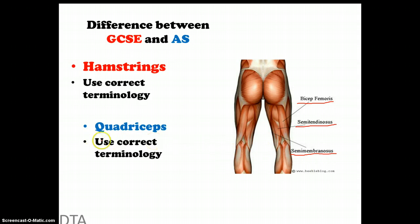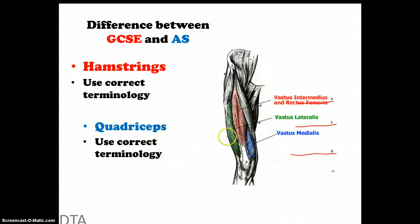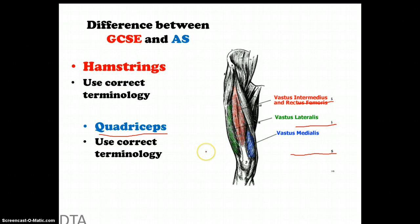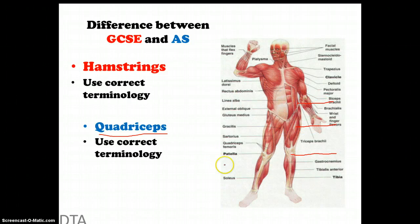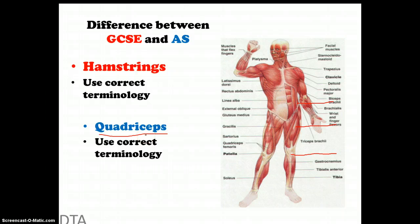Another example: quadriceps. You need to use the correct terminology — vastus intermedius, rectus femoris, vastus lateralis, and vastus medialis. Again, you would identify the quadricep group and then name the muscles within it. So identify all of those muscles within the body, make sure you're applying them to sporting examples where appropriate, and principally focus on the depth of detail. Each one of these will be in your booklets, so go over them before the sessions.